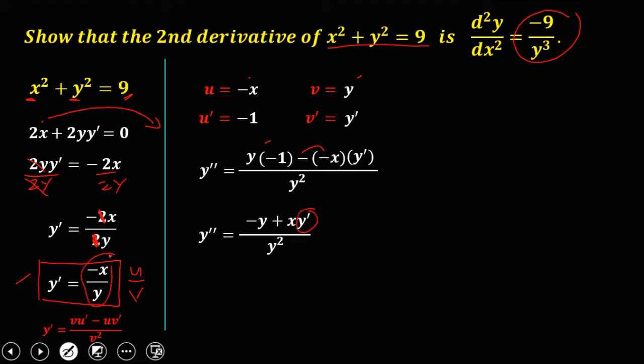Since y' is equal to negative x over y, we substitute this into the expression. So y double prime equals negative y plus x times negative x over y, all over y squared.